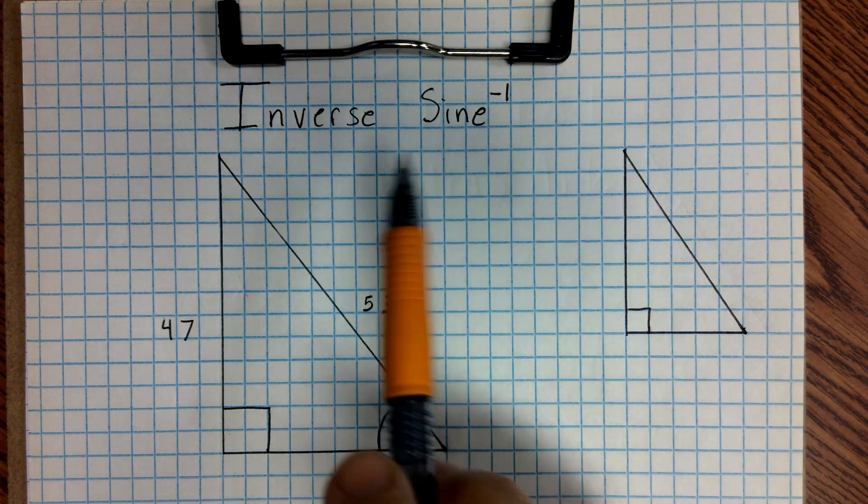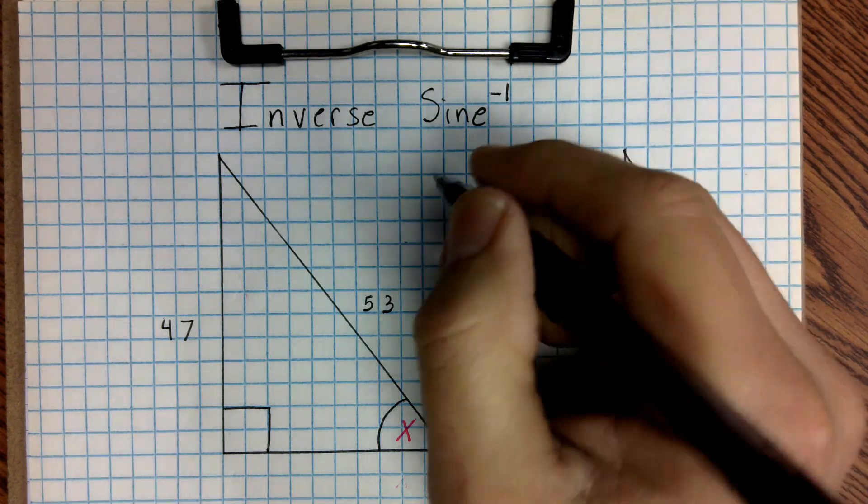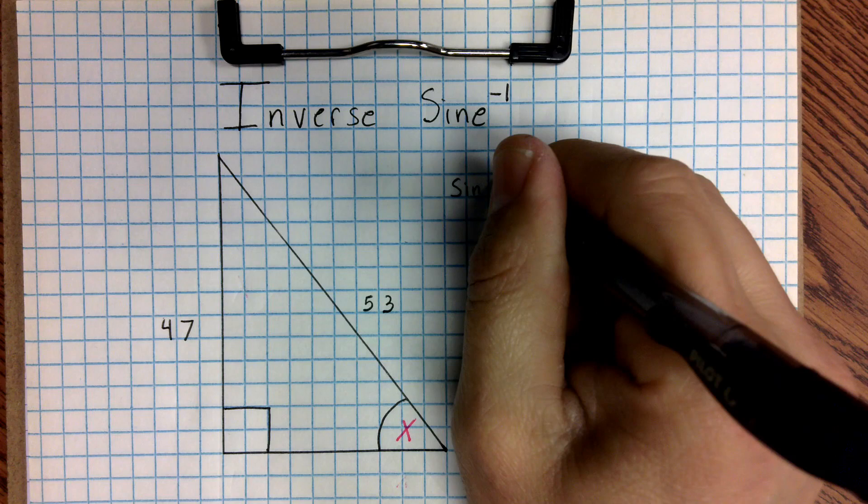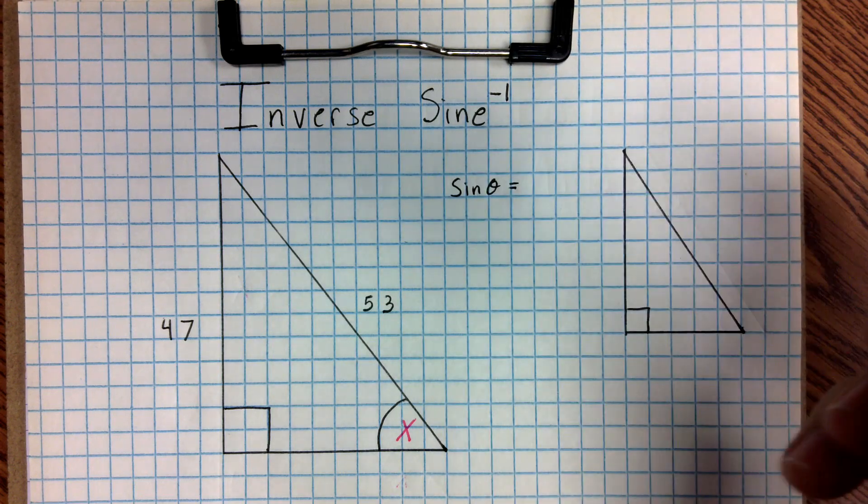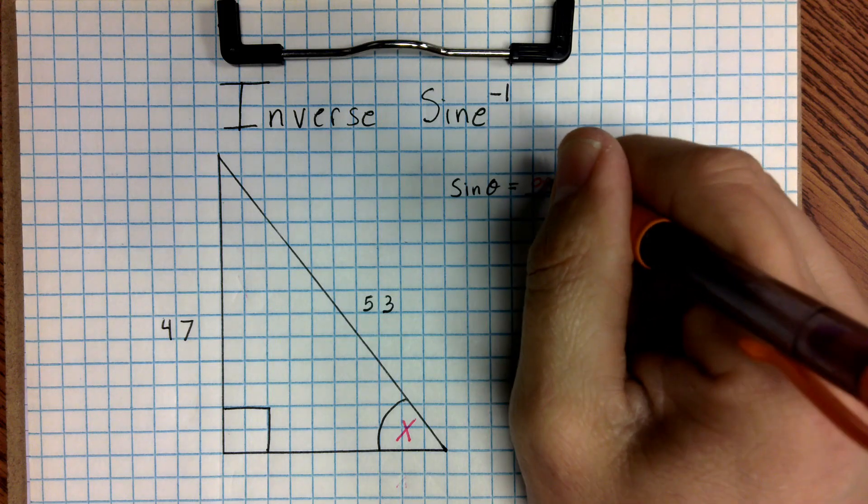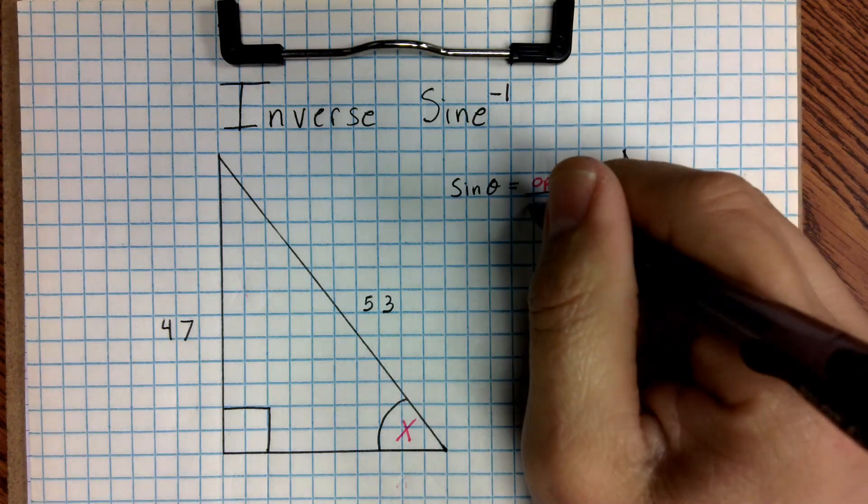In this video, we're going to look at using the inverse of sine to find a missing angle. So far, you've been using sine to solve for missing sides of a triangle. Just to refresh your memory on the relationship with sine, if I wanted to talk about sine theta, I would tell you, as before, that it's going to be equal to the opposite side over the hypotenuse.